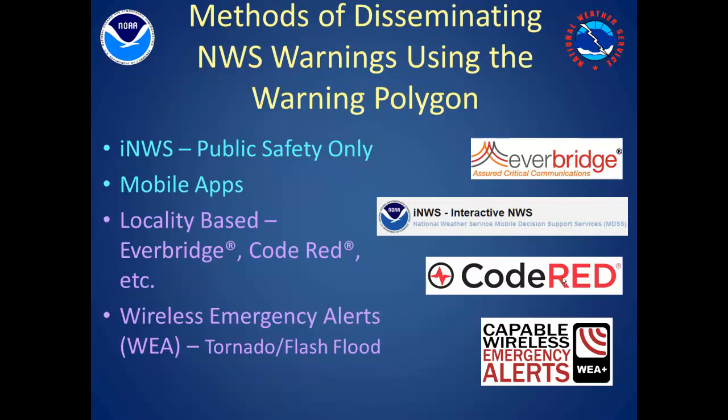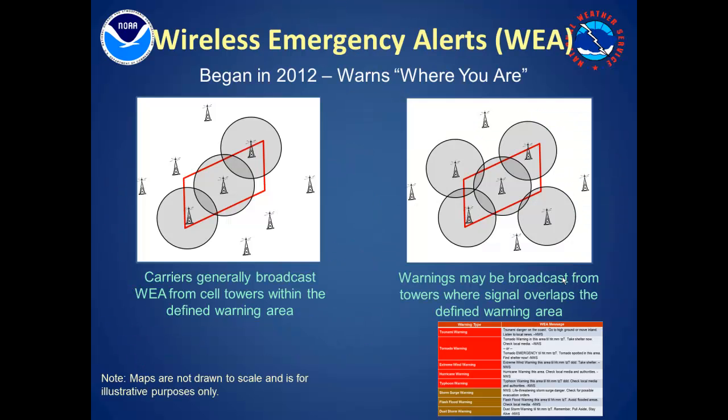WEA is a joint venture between the wireless carriers, the National Weather Service, and the U.S. Department of Homeland Security. WEA warns you where you are at the time the warning is issued. This has a huge advantage in our mobile society, where vacations, business trips, etc., often place us in geographically unfamiliar territory.